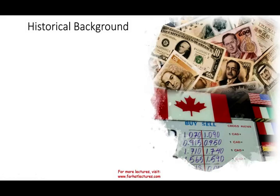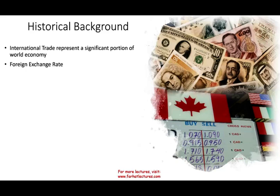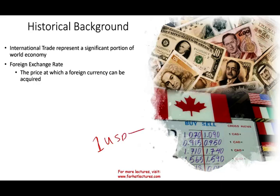Let's look at a brief historical background about international trade and foreign exchange. International trade right now represents a significant portion of the world economy. Most companies sell outside their territory and most countries buy supplies from outside their national territory. Therefore we have to have a foreign exchange rate, because when you buy or sell in another country you have to use their currency. For example, one US dollar today would buy you $1.30 Canadian dollars — that is the exchange rate.